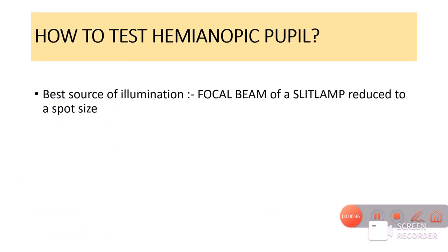Therefore in order to test a hemianopic pupil we actually need a focal beam of light for this hemi testing. We do not want a diffuse torch light which will stimulate the entire retina. We actually want a focal beam of light which will only stimulate the part of retina that we want to stimulate, and for that purpose we usually use a slit lamp focal beam that can be reduced to a spot size.